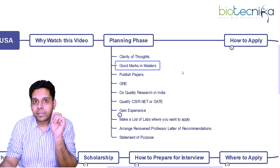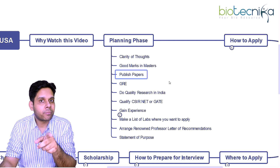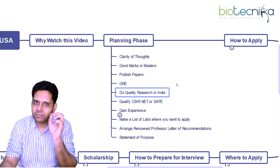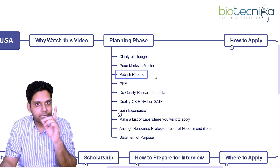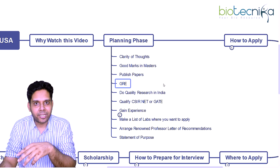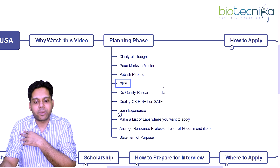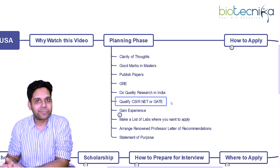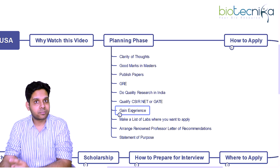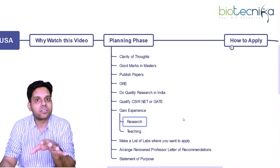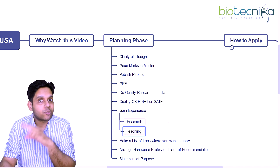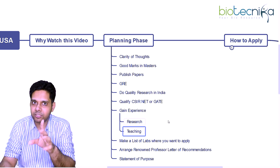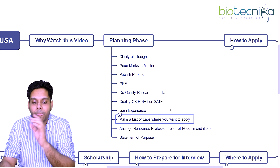Once you have clarity of thoughts, while you're studying your master's, make sure you have good marks. If you decide during your master's that you want to go abroad for a PhD, that's a good idea. Publish papers — and to do that, you need to do some research. Do quality research in India in some lab as a project assistant, research assistant, JRA, or FSRA. Side by side, prepare for GRE, TOEFL, or IELTS, whatever your dream university requires. If you can qualify CSIR-NET or GATE, that's a great add-on.